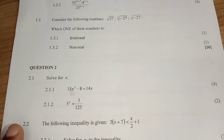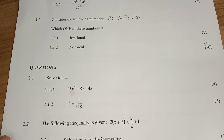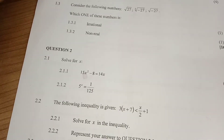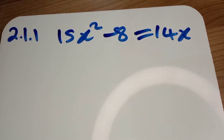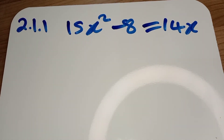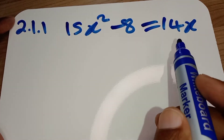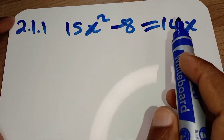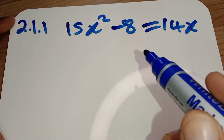Hello guys, we are on 2.1 - question 2.1.1 says solve for x, for four marks. We are given this equation and requested to solve for x. When we solve for x, we will start by taking the 14x to the other side.